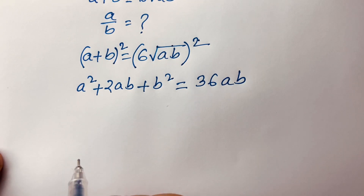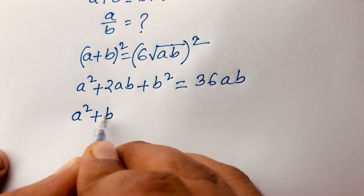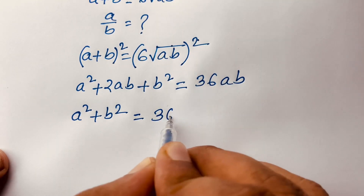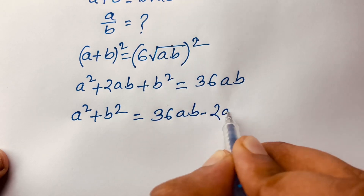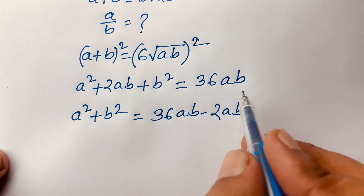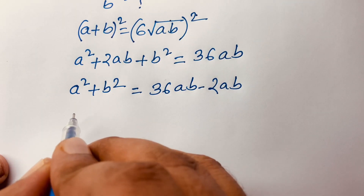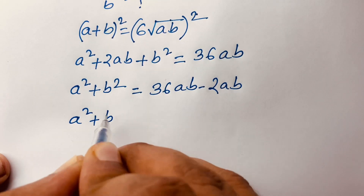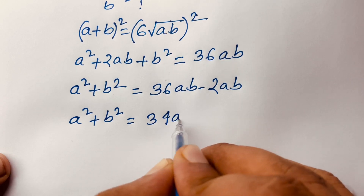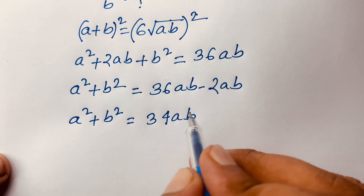I can say here is A square plus B square is equal to 36AB minus 2AB. I just move 2AB to the right side, so we find minus 2AB. Then I can say A square plus B square is equal to 34AB, because 36AB minus 2AB is 34AB.